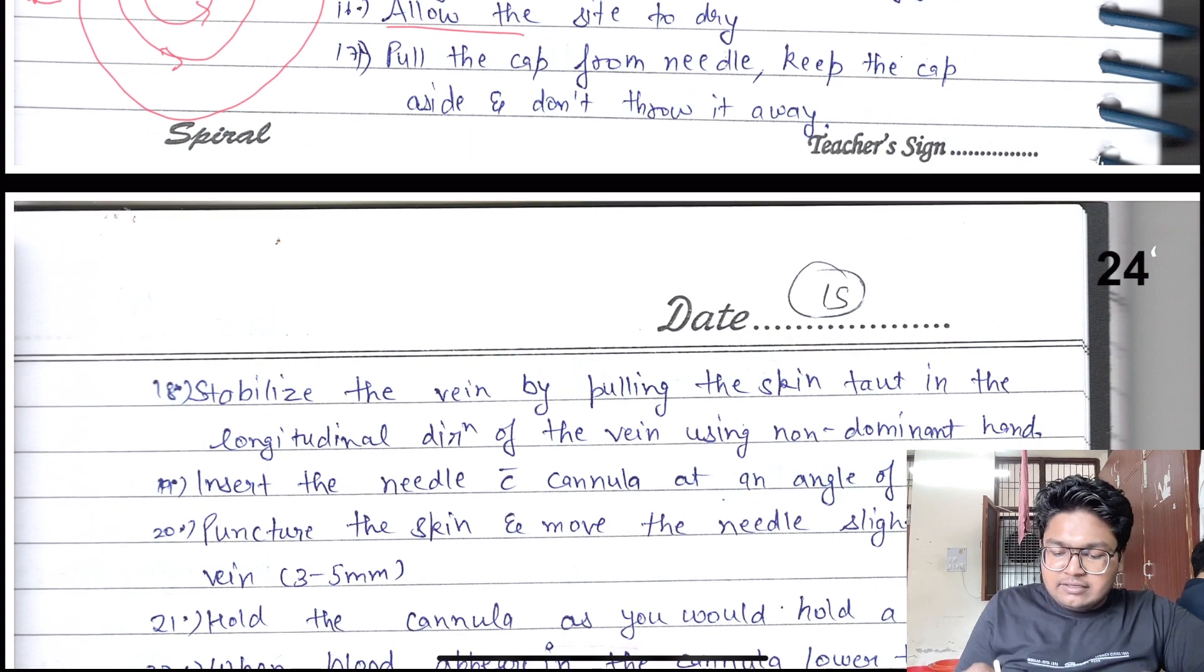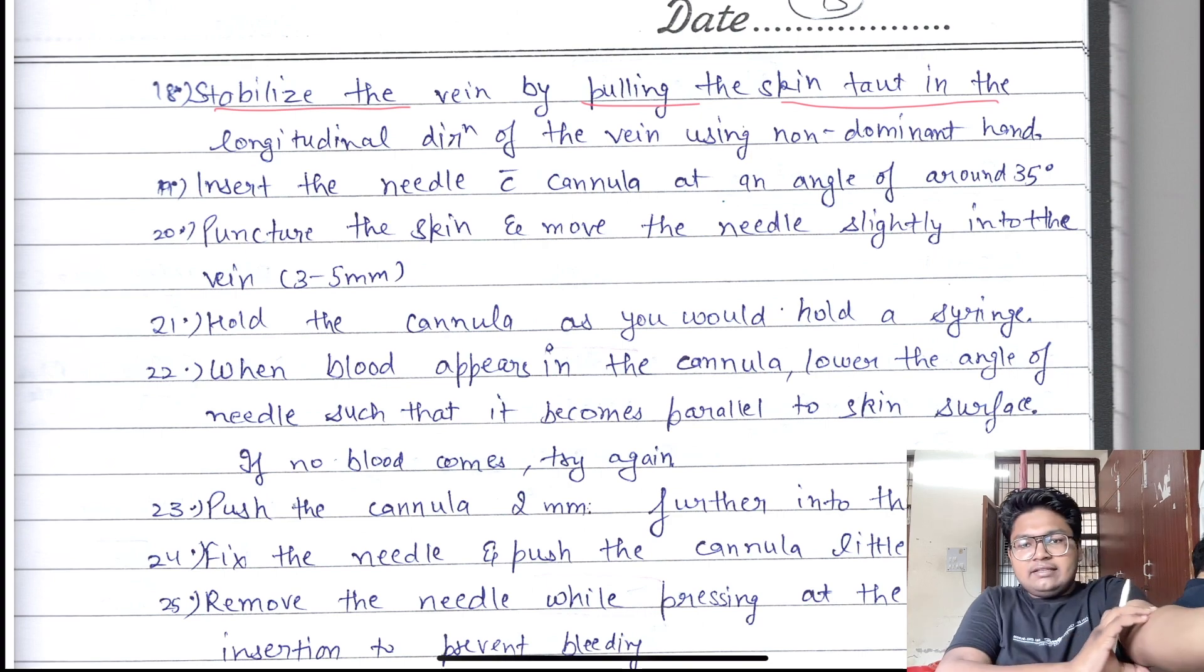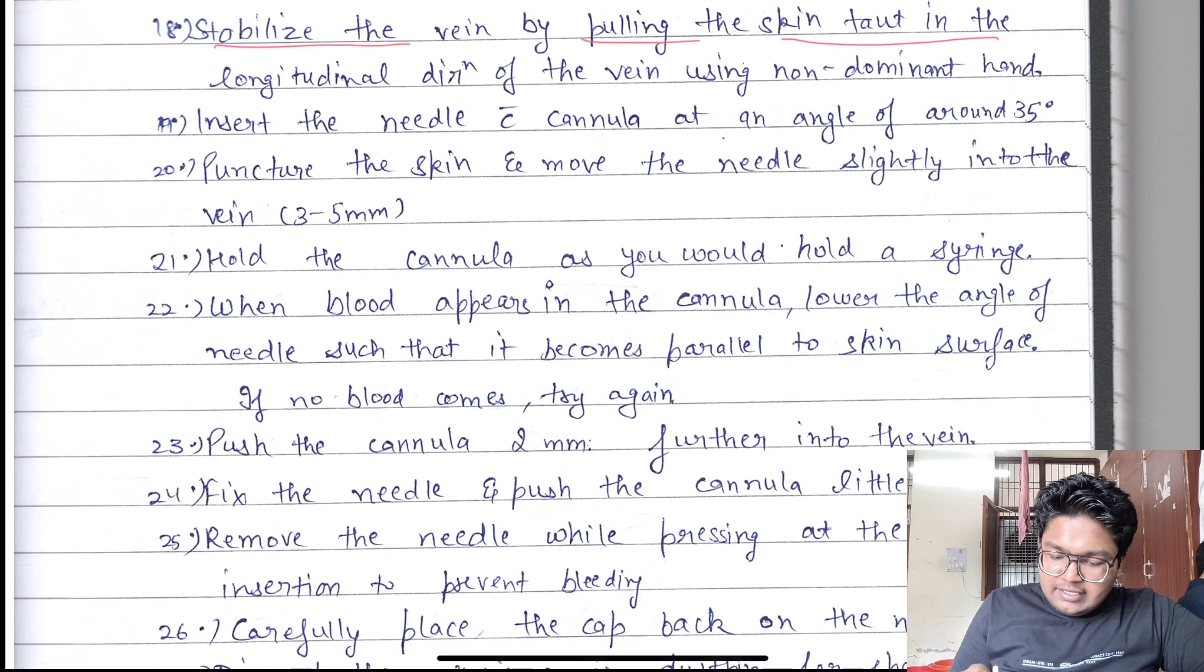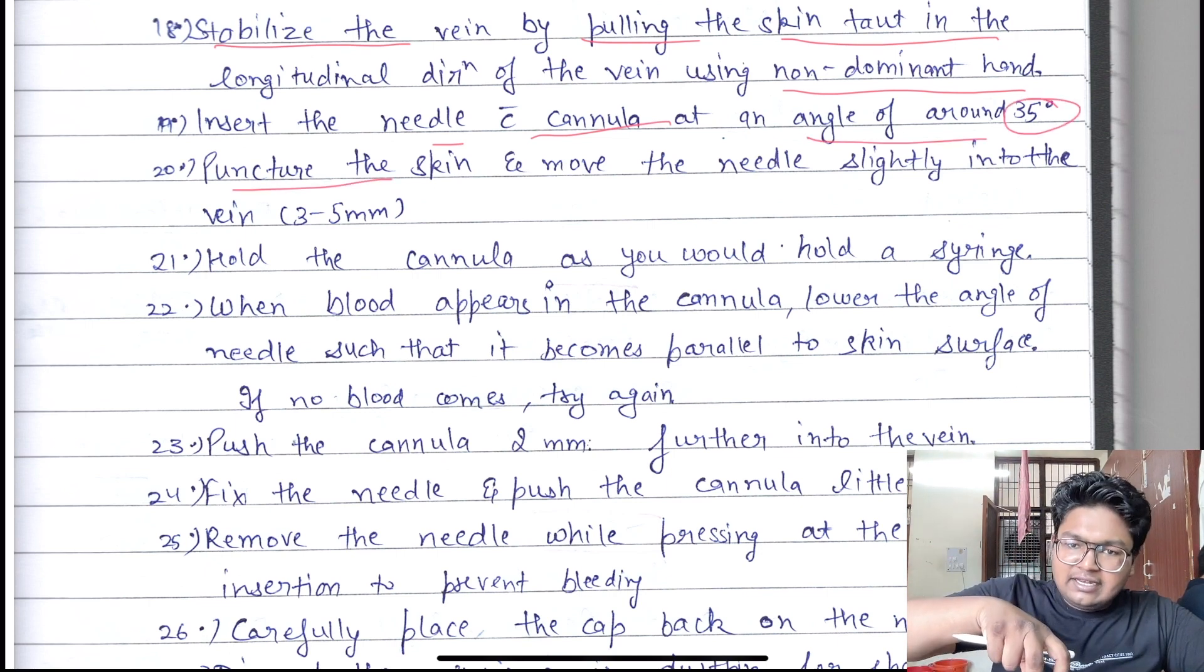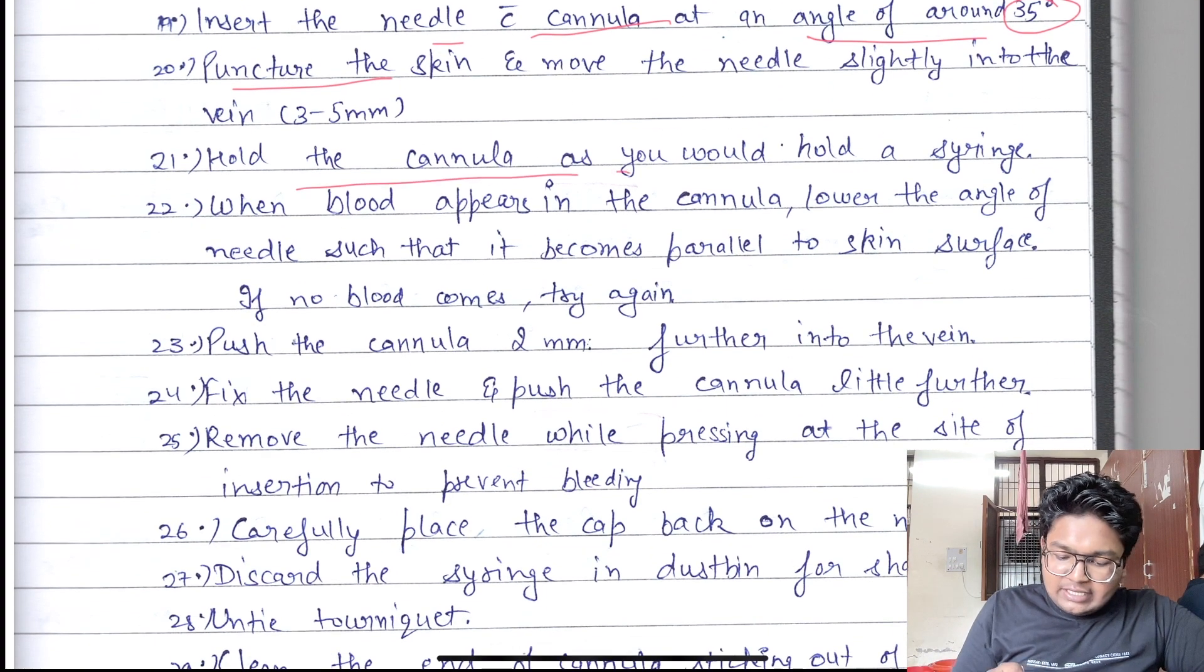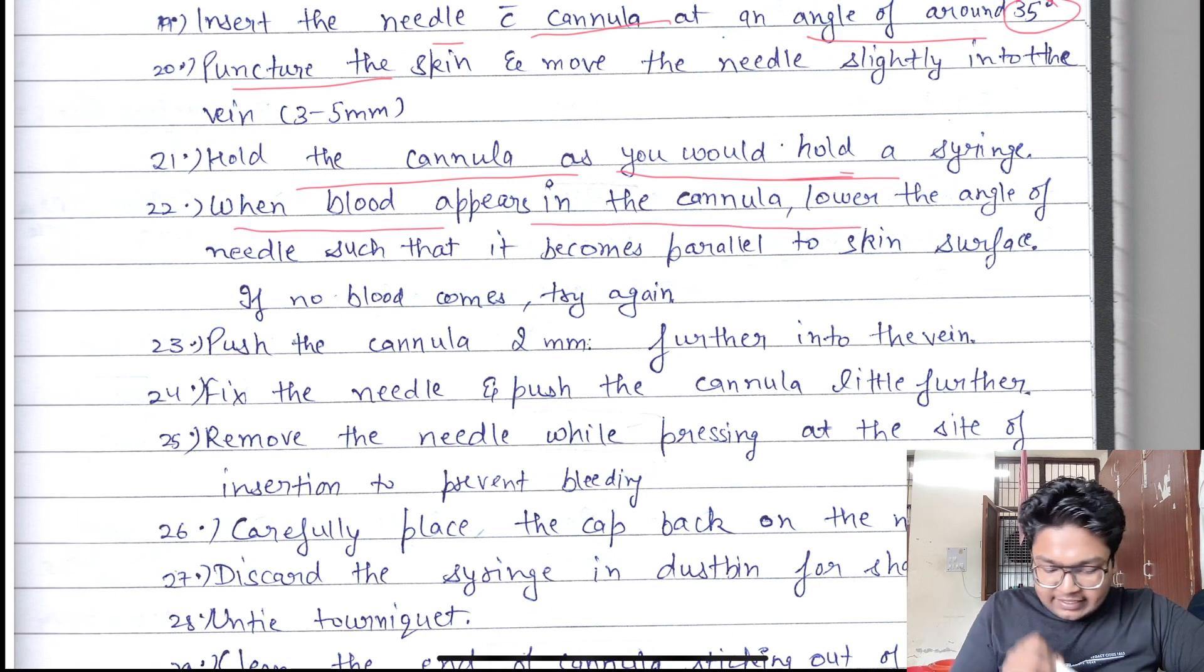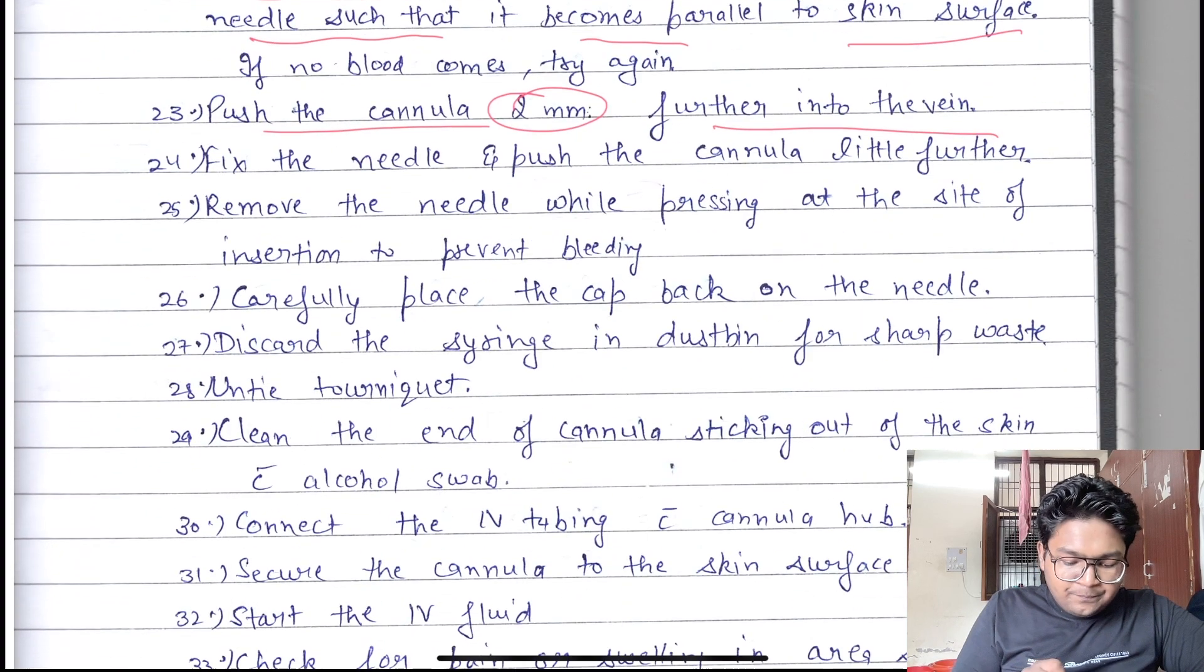Pull the cap from the needle, keep the cap aside and don't throw it away. Stabilize the vein by putting the skin taut like this. With the non-dominant hand, keep the vein taut. Insert the needle and cannula at an angle of 35 degrees, puncture the skin, move the needle slightly, then parallel to the skin, just go like this.